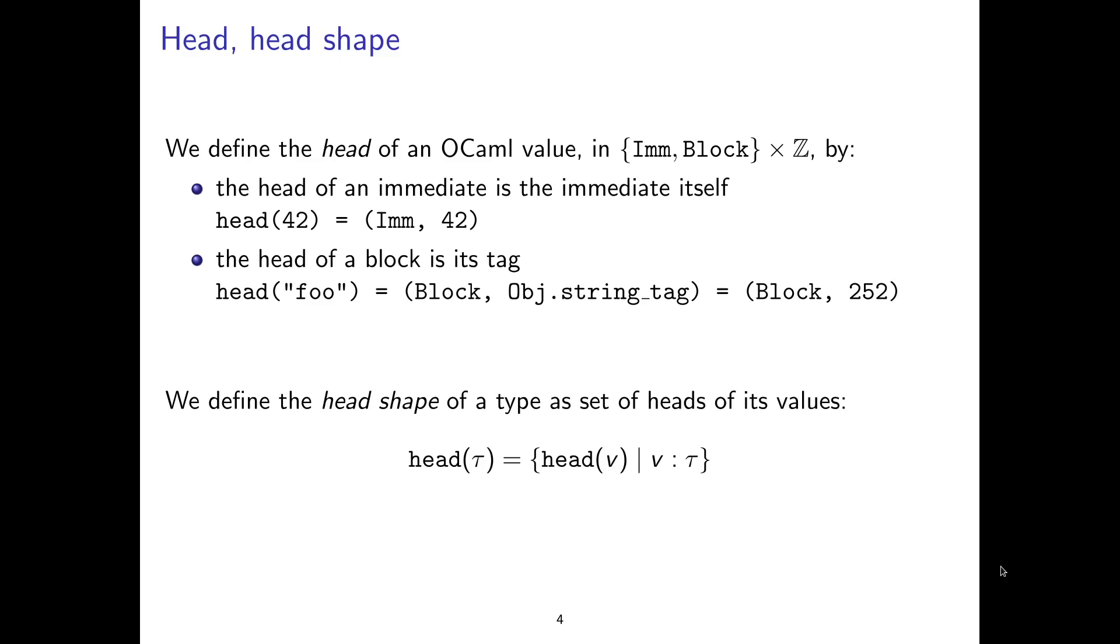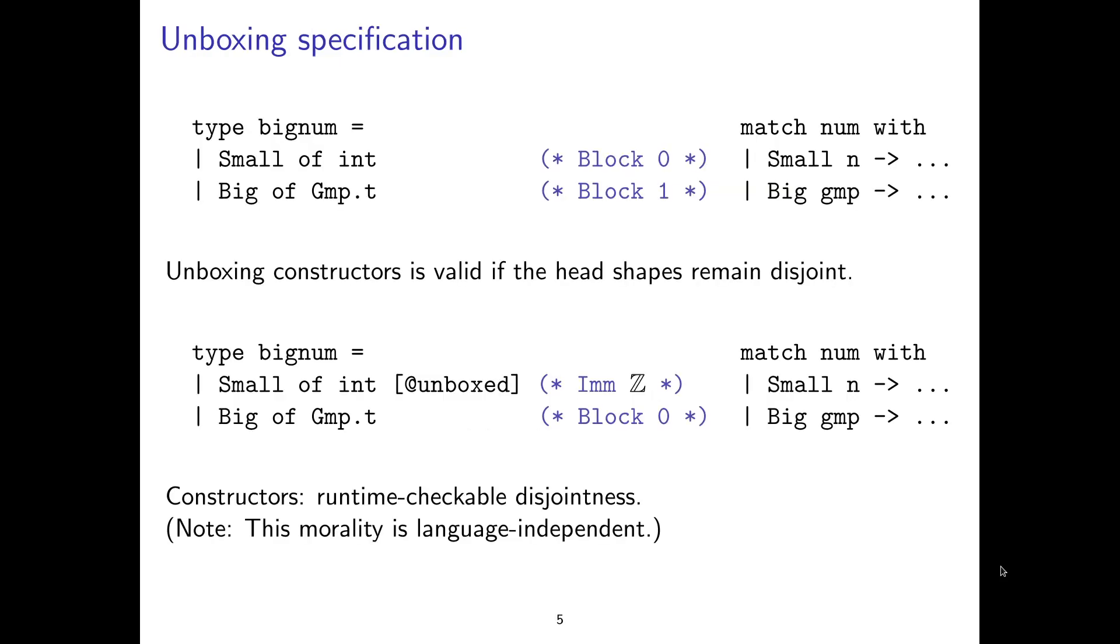So in OCaml, when you have a block on the heap, it contains some information, the tag, that is a sort of runtime type information that is used by the garbage collector and also by some runtime services such as comparison and serialization. So for example, the foo literal string, the head shape would be that it's a block and that its tag is string tag, which is 252. So the tag is fit in one byte. And now we define the head shape of the type as the set of heads of any of its values. So in particular, if you have two types whose head shapes are disjoint, then its values must be disjoint, which heads are function from values to a smaller representation.